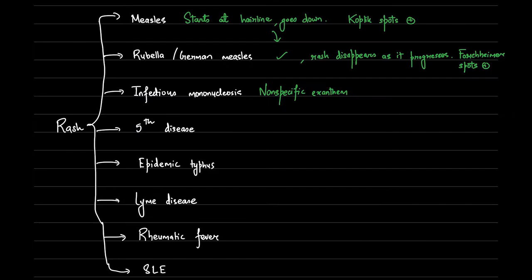Infectious mononucleosis has a non-specific exanthem — a widespread rash accompanied with systemic symptoms like fever, malaise, and headache. Remember that it is caused by Epstein-Barr virus and it spreads via bodily secretions, and is thus also called kissing disease. So if you see relevant history and symptoms like pharyngitis, tonsillitis, lymphadenopathy with a non-specific central rash, think of infectious mono.